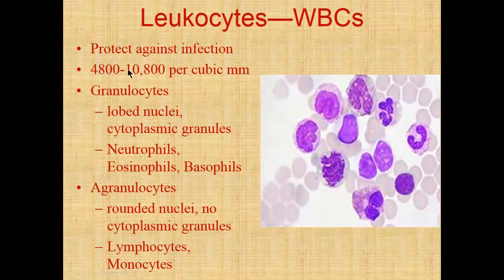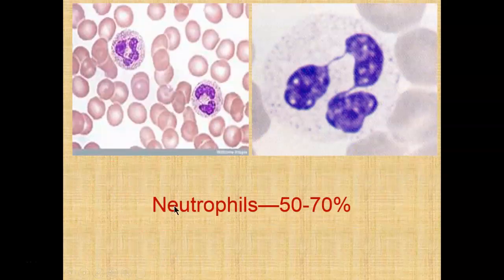You have approximately 4,800 to 10,800 leukocytes — rounding up, somewhere around 5,000 to 11,000 of these cells — in the same amount of blood. You can see there are many, many fewer leukocytes than erythrocytes.